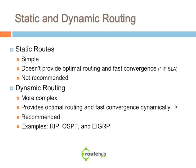Dynamic routing is recommended for pretty much all environments, but really for medium and large environments or networks that house multiple network devices and subnets. Some examples of dynamic routing would be RIP, OSPF, and EIGRP.